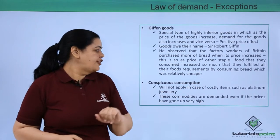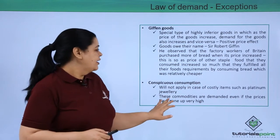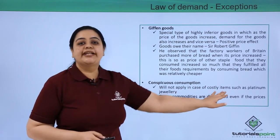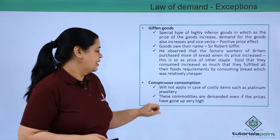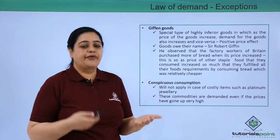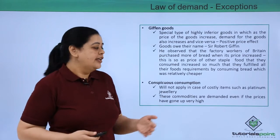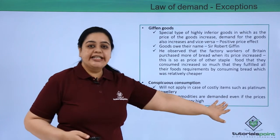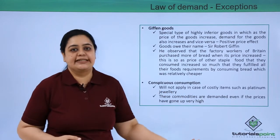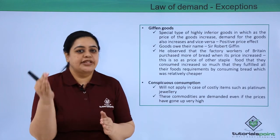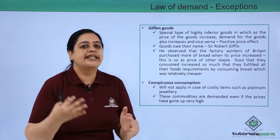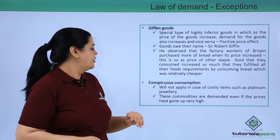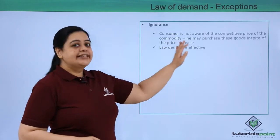Next comes conspicuous consumption. The law of demand will not apply to costly items such as platinum jewelry, premium cars, or very high-end perfumes. These commodities are demanded irrespective of the price, so even when the price goes up, the demand will either increase or remain constant. That is an exception to the law of demand.